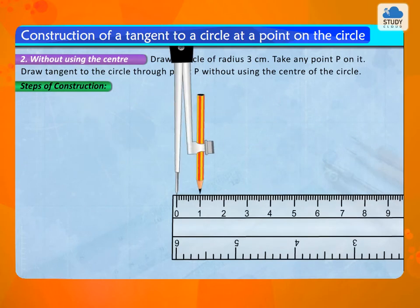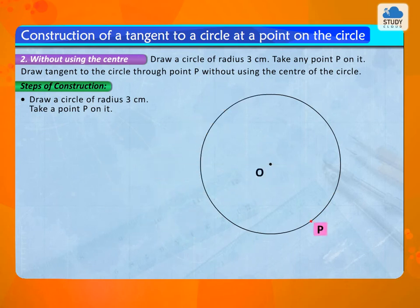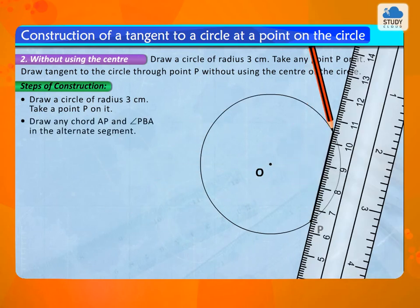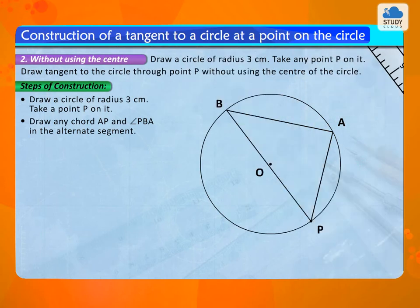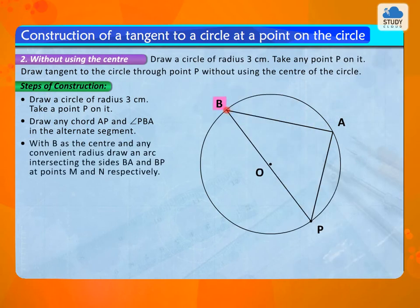Steps of construction: Draw a circle of radius 3 cm. Take a point P on it. Draw any chord AP and angle ABP in the alternate segment. With B as the center and any convenient radius, draw an arc intersecting the sides BA and BP at points M and N respectively.